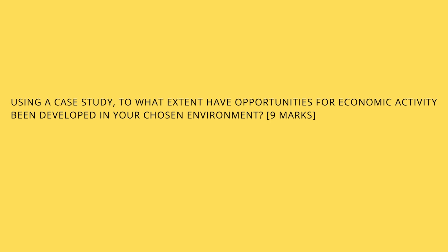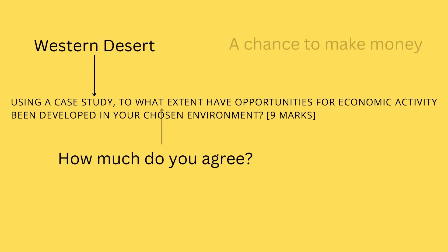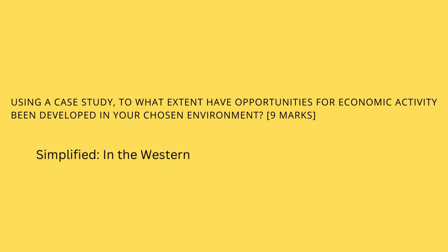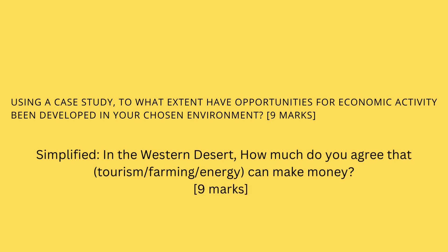Before we answer this question we need to break it down. Our case study is the Western Desert. 'To what extent' means how much do you agree. An opportunity is the chance to do something — in this case, to make money. Economic activity can include farming, mining, tourism or energy. Now we have broken down the command and the key words, we can simplify this question: in the Western Desert, how much do you agree that tourism, farming, energy or mining can make money?